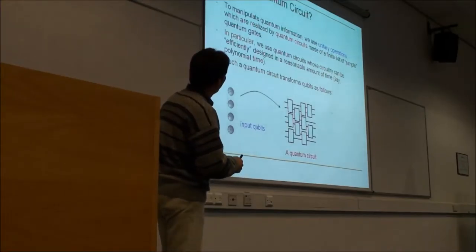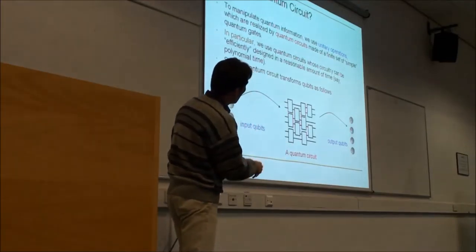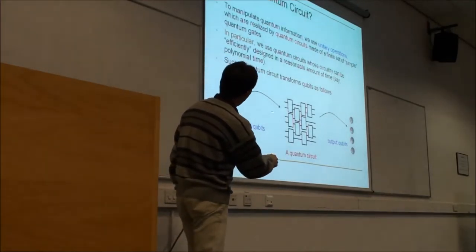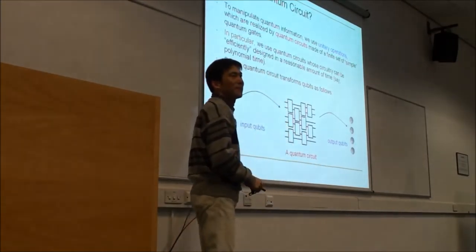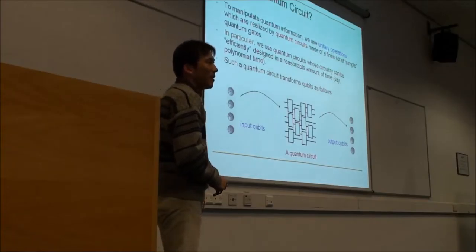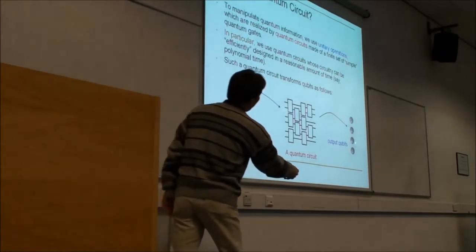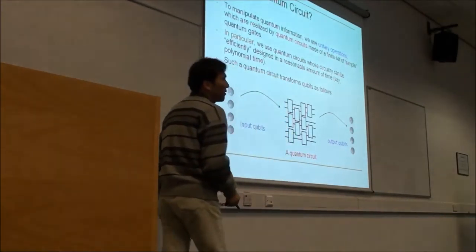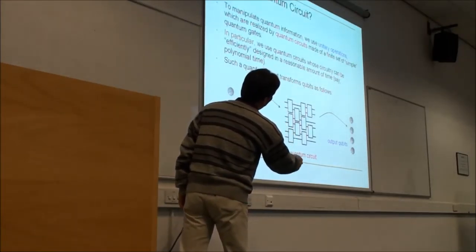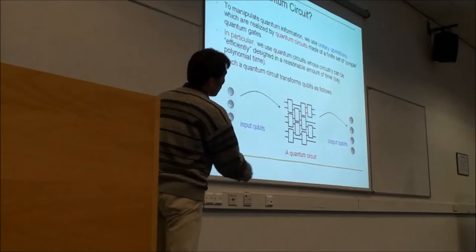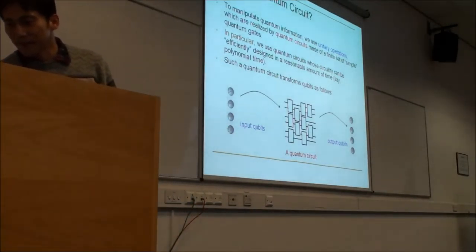We can use all those gates to build quantum circuits, simply positioning those gates nicely so that the input qubit is manipulated and we get the output. Each gate is reversible because of unitarity, so the whole entire circuit is reversible — we can take the output, run it backward, and get the same input as before.